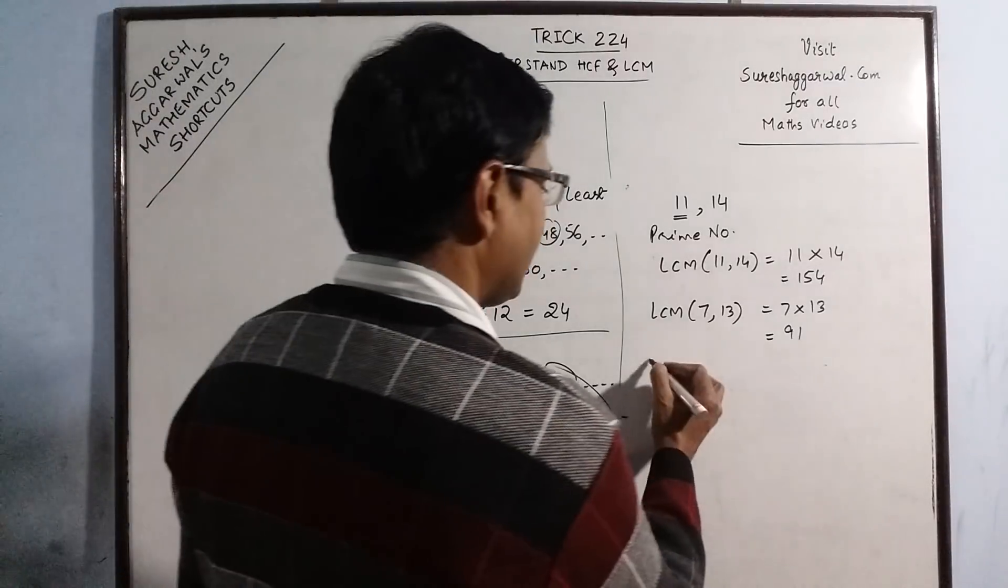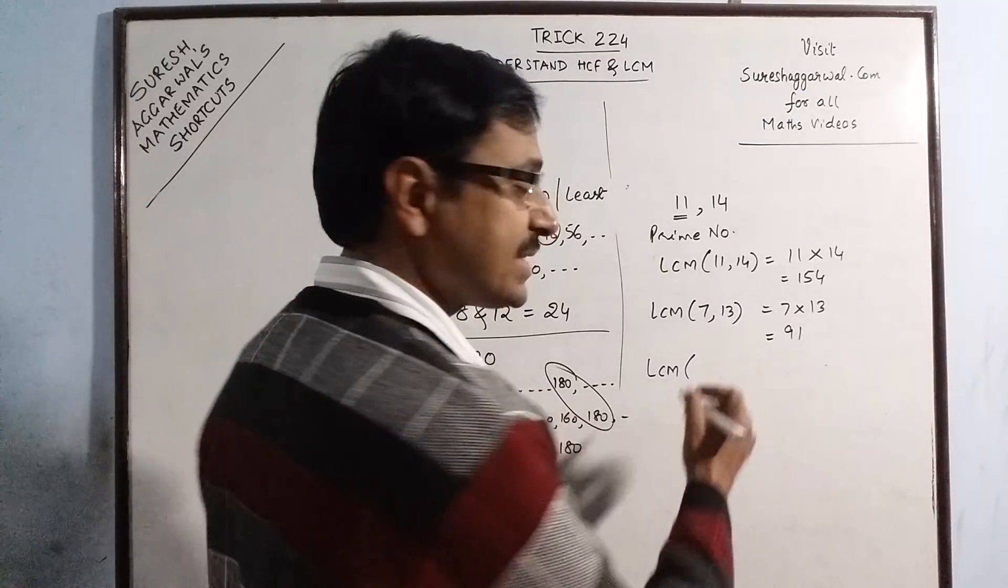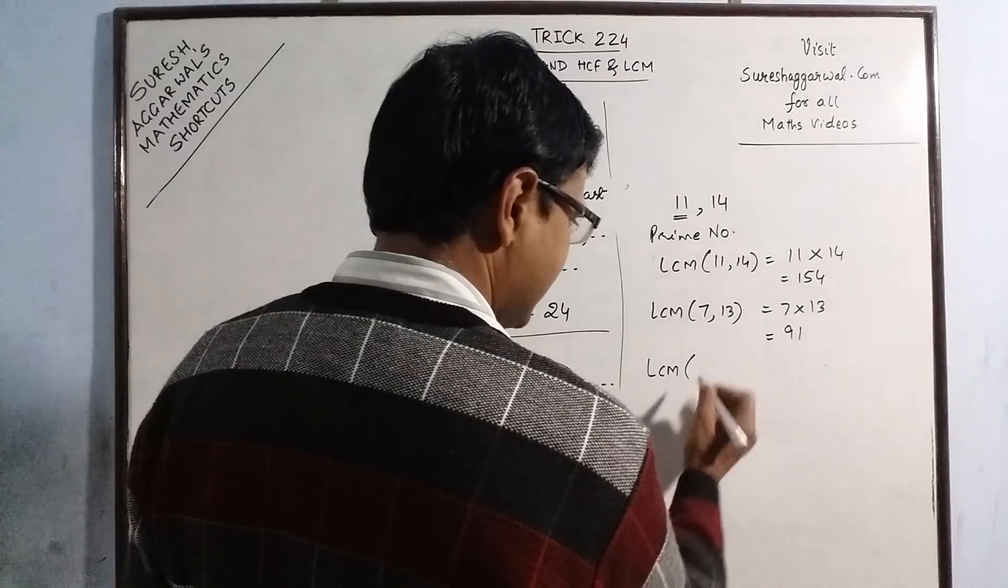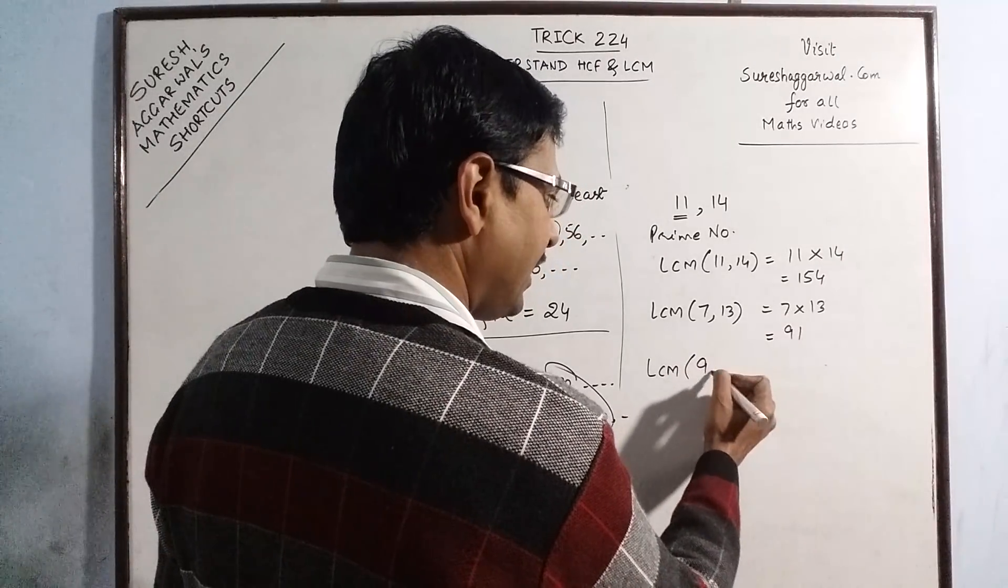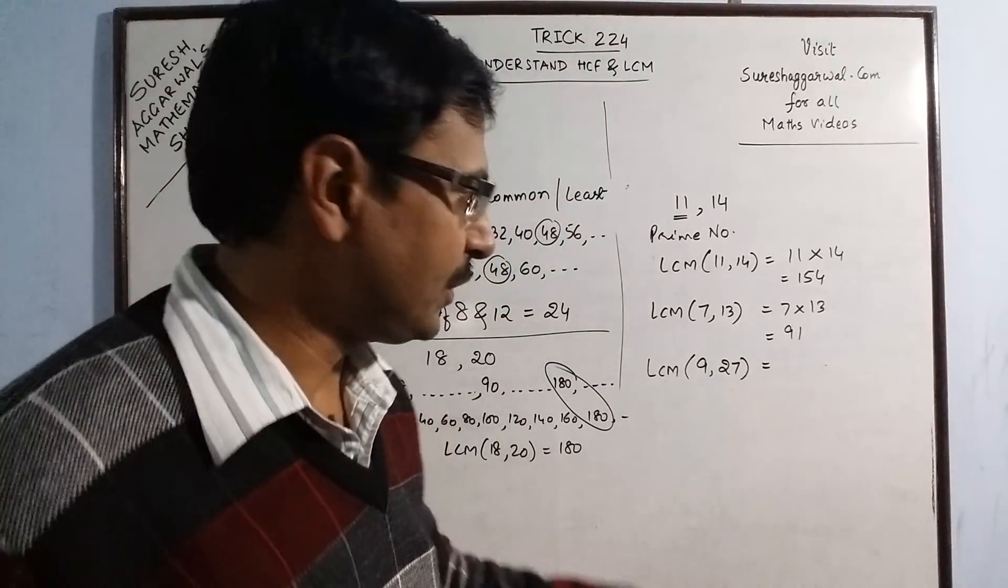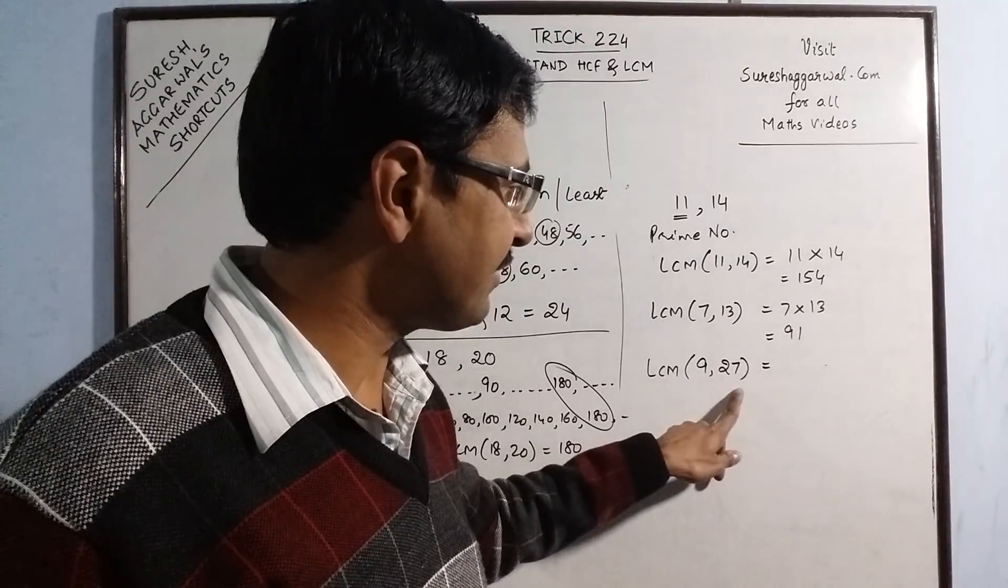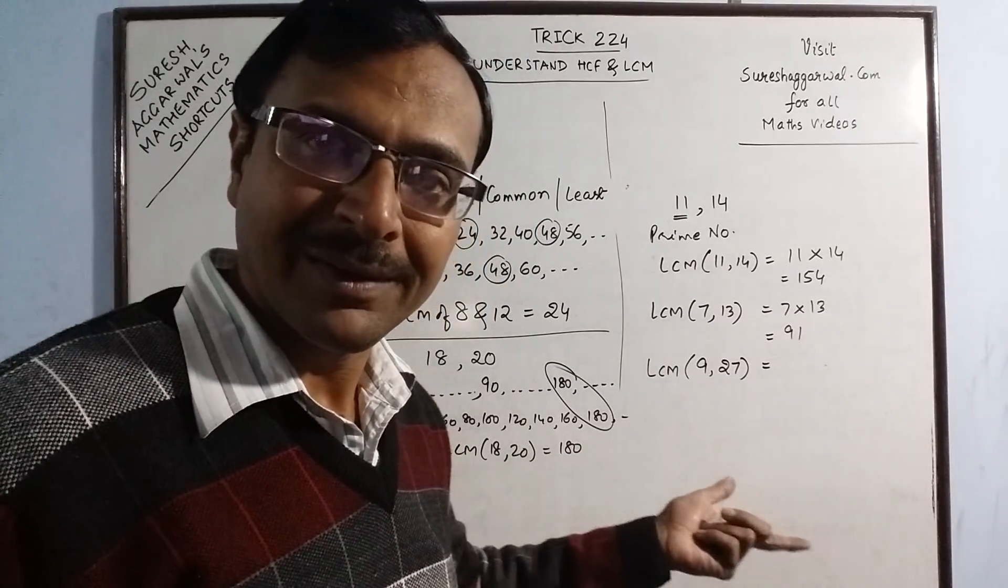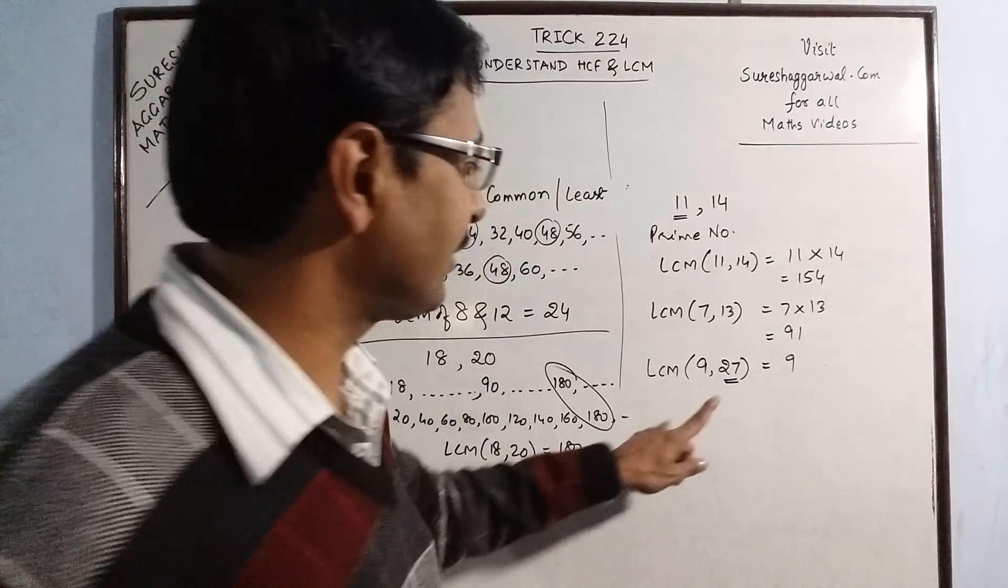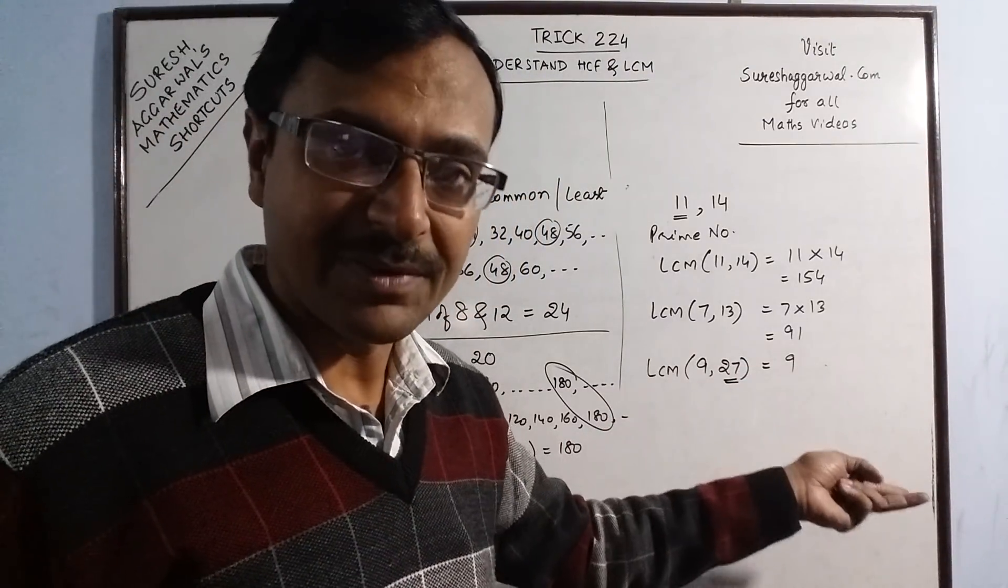Now suppose there is a case in which the two numbers exist in the table of the smaller number. Now see, suppose we have 9 and 27. Now you don't need to find the LCM here because least common multiple will be the larger number only because 27 comes in the table of 9. So LCM is 27 because 27 is divisible by 9. Whenever the larger number is divisible by the smaller, then the larger number itself is the answer.